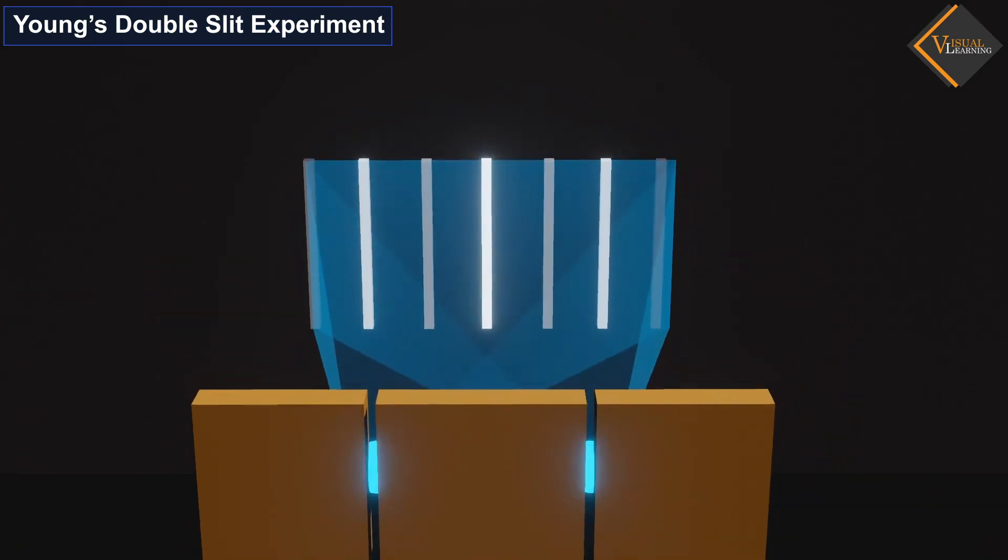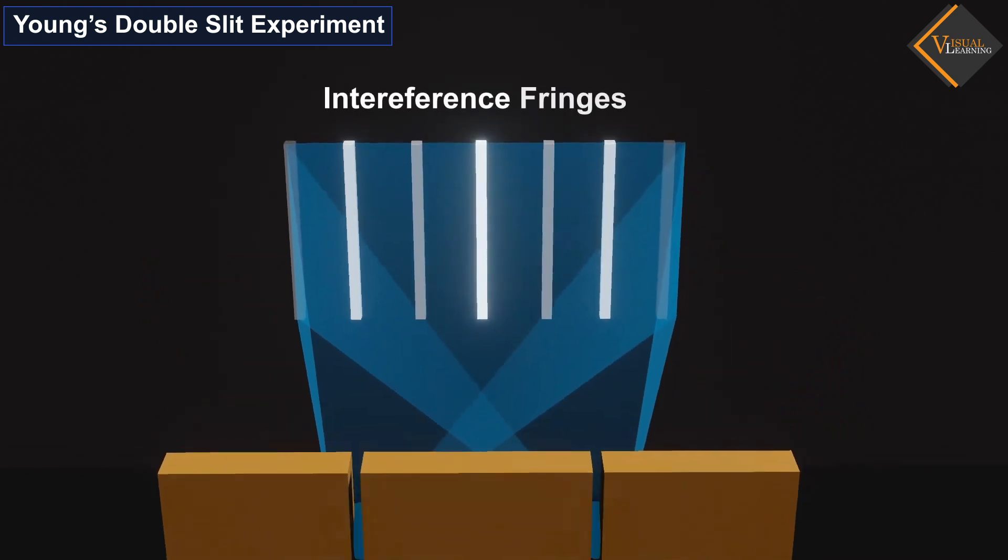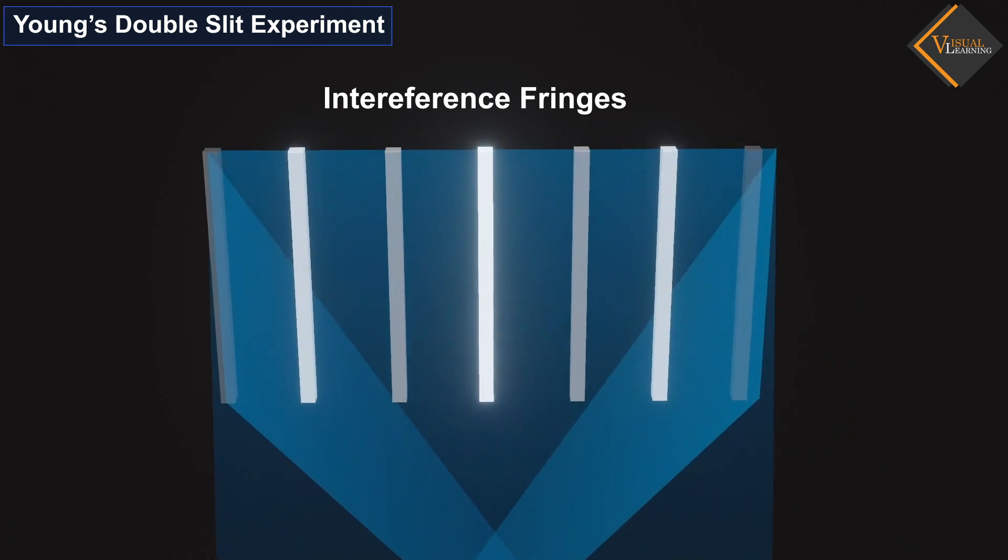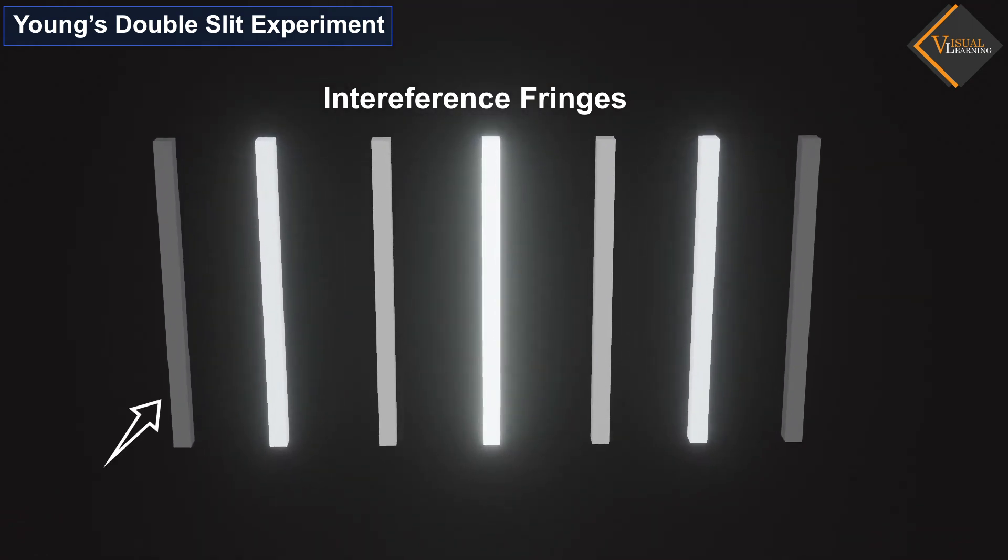We refer to this light pattern as interference fringes. In this pattern, dark and bright regions are formed at different places. This pattern signifies that the intensity of the light waves varies at different positions on the screen.